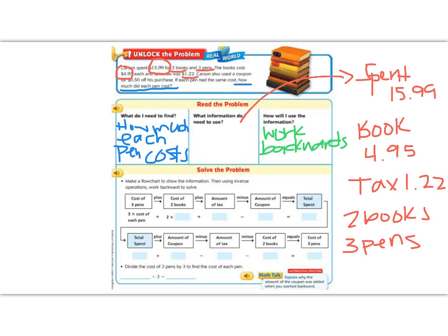So it says make a flow chart to show the information and then use inverse operations to work backwards to solve. So we know that we have the cost of three pens, so that's going to be three times each pen. But we don't know what that pen costs yet, so we're going to go to the next step. We have the cost of two books. Well, one book is $4.95. So we're going to have to multiply two times $4.95. Plus, we're also going to add the tax in, because we pay taxes extra, $1.22.